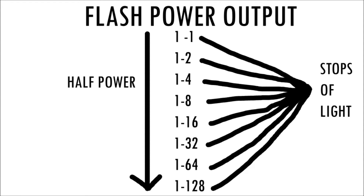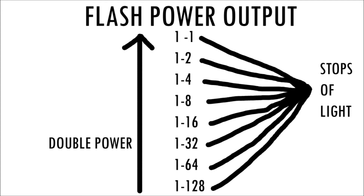Let's take a look at the graph. As you can see, I have all the power settings from the back of the flash going from full power all the way down to 1/128 power. Each one of these stops are exactly that — one stop of light. As you drop down one stop of light, basically what you're doing is halving your power. So if you start at a quarter power and stop down one stop to an eighth, you are halving the power output from the flash. The same can be said going in the other direction — if you're starting at 1/32 power and going up one stop to 1/16, you are doubling the power. If you start at an eighth power and want to go to full power, you need to go three stops of light to get to full power.